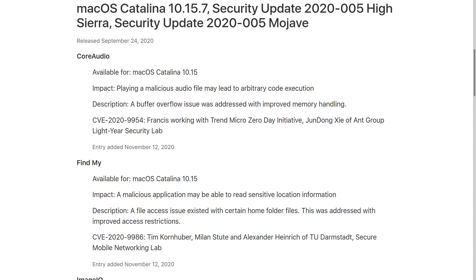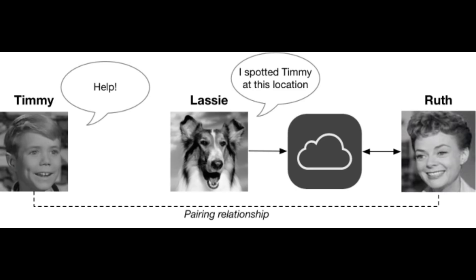What Apple would probably be doing is something like this. We have the lost phone, which is going to be Timmy; your device passing by, which is going to be Lassie; and the iPhone's owner being Ruth. So you're reporting Timmy's location to Ruth through Apple. We want to make sure that people can't use their iPhones to find devices that don't belong to them. So we can't have Timmy just broadcast his name and his location — we need to use something smarter, like a pseudonym. In fact, he could use a list of pseudonyms that can't be linked together, that Ruth knows in advance.